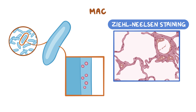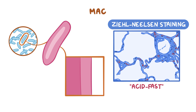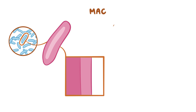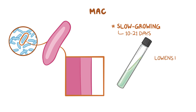The stain binds to the mycolic acid in the mycobacterial cell wall, and after staining, an acidic decolorizing solution is applied which removes the red dye from the background cells, tissue fibers, and any organisms in the smear except mycobacteria, which retain the dye. This is why they're called acid-fast, and they appear bright red on a blue background. Finally, MAC are slow-growing bacteria, and it typically takes them 10 to 21 days to grow on a medium called Lowenstein-Jensen.